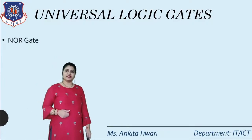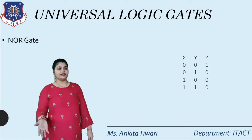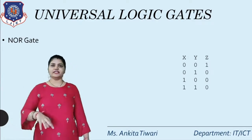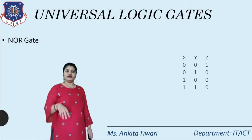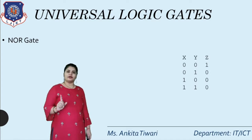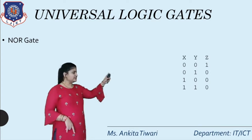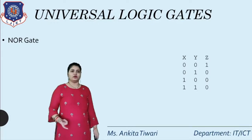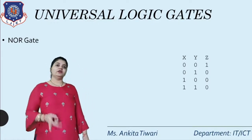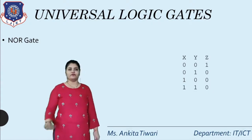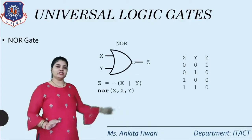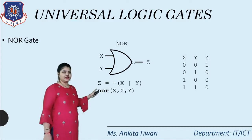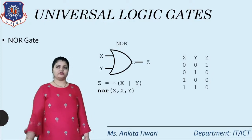The NOR gate is the negation of OR. Where OR gives 1, NOR gives 0. So: 0+0 = 1, 0+1 = 0, 1+0 = 0, 1+1 = 0. If any value is 1, output is 0; only when both values are 0 do we get output 1. The symbol is an OR gate with a bubble in front, and the equation is Z = X̄+Ȳ (complement of X OR Y).